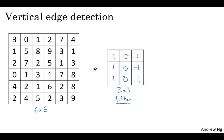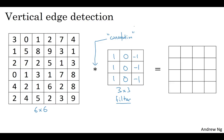What you're going to do is take the six-by-six image and convolve it — the convolution operation is denoted by this asterisk — and convolve it with the three-by-three filter. One slightly unfortunate thing about the notation is that in mathematics, the asterisk is the standard symbol for convolution, but in Python this is also used to denote multiplication or element-wise multiplication. So this asterisk is overloaded notation. The output of this convolution operator will be a four-by-four matrix, which you can think of as a four-by-four image.